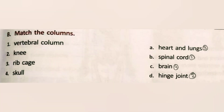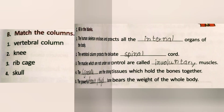Part B: Match the columns. First, vertebral column — the vertebral column protects the spinal cord. Second, knee — hinge joint is the correct option; we match knee to the hinge joint. Third, ribcage — protects the heart and lungs, option A is correct. Fourth, skull — protects the brain.